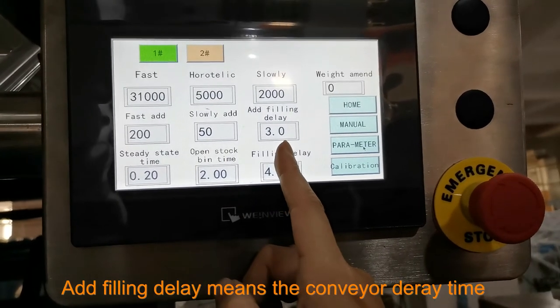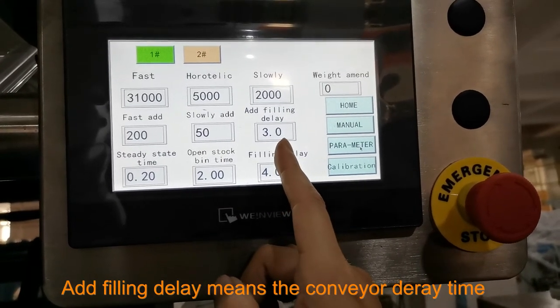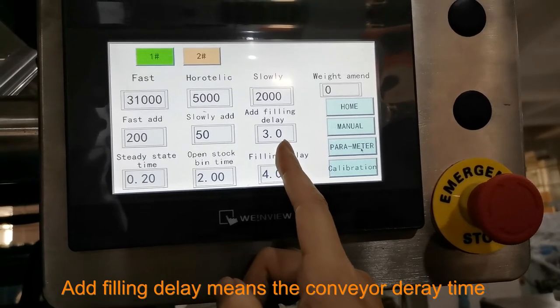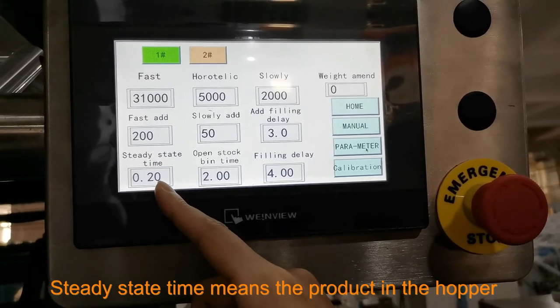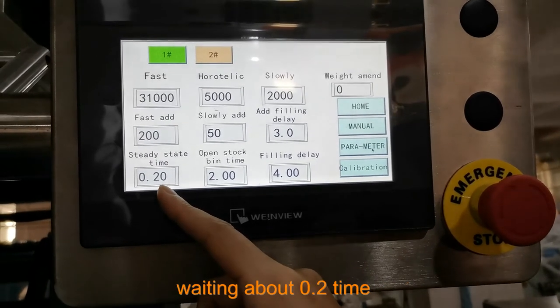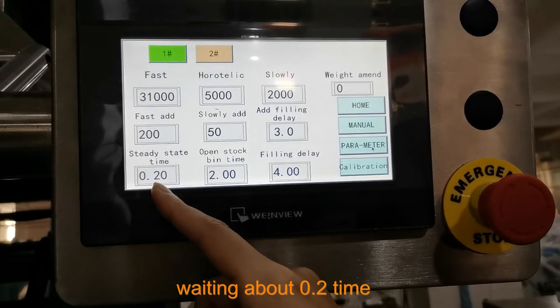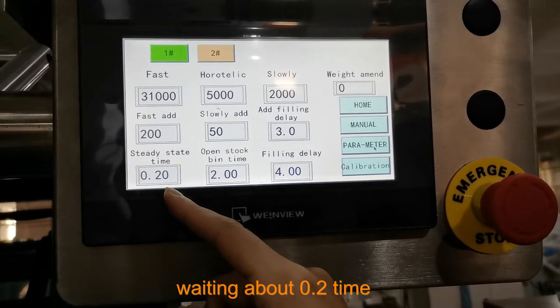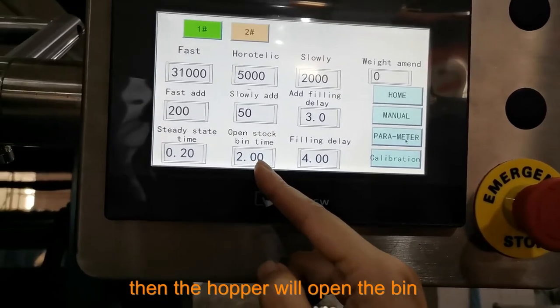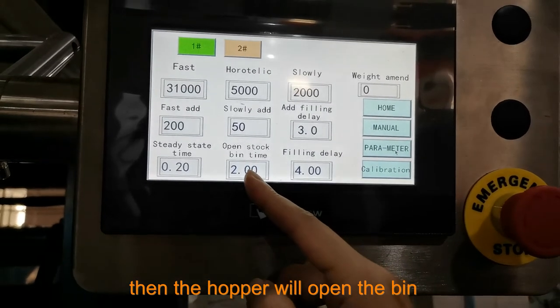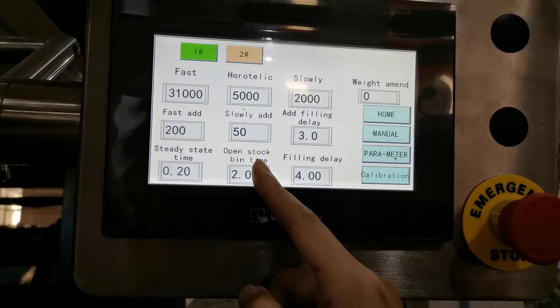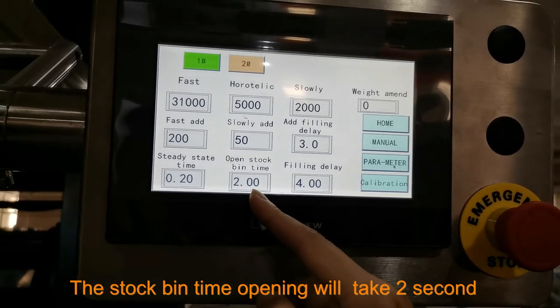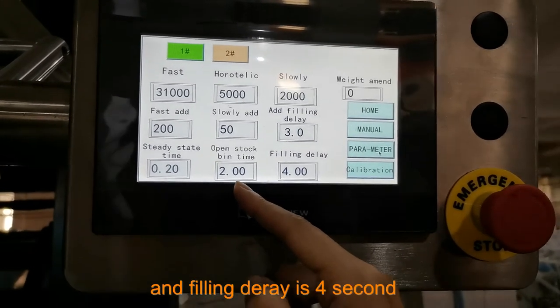And this filling delay means the conveyor filling delay time. And steady state time means the product in the hopper waiting about 0.2 seconds, then the hopper will open. The beam stop stock in time open will take 2 seconds and filling delay is 4 seconds. This is the parameter.